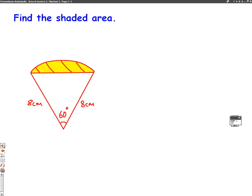Find the shaded area. So we need to work out this yellow area at the top. The way we do that is we first realize that the whole shape, the whole outside of this shape, is a sector.